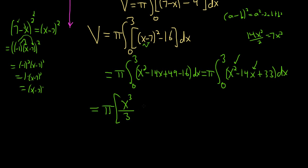This will give us 7x squared. And then integrating the 33 will give us 33x. And we're going from 0 to 3.